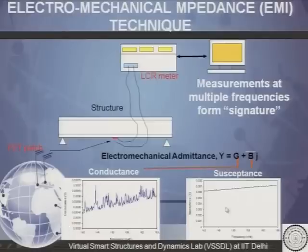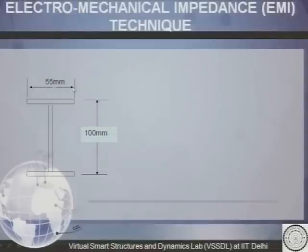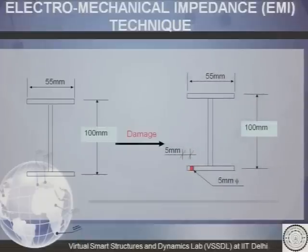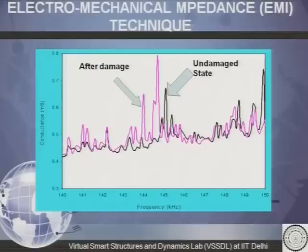These are the conductance and the susceptance plots of a typical EMI signature. The LCR meter captures conductance values for each frequency, and this becomes the conductance signature of the PZT patch attached to a structure. We considered an I-section in which a hole of 5 mm diameter was created at the bottom flange as damage. When we compare the signatures, there is a clear difference between the undamaged and the damaged conductance signature. In this way we can clearly identify damage in any structure using the EMI technique.